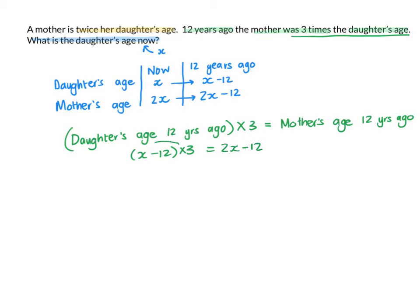Now just to solve the equation: three x minus two x equals negative twelve plus thirty-six. So I get x equals thirty-six minus twelve, which is twenty-four.